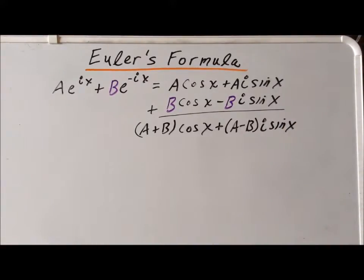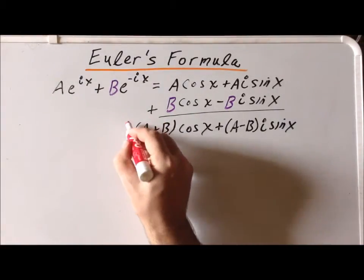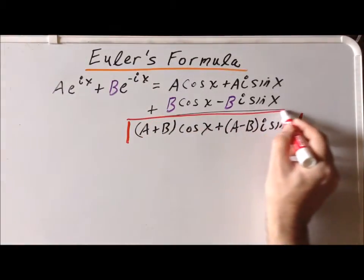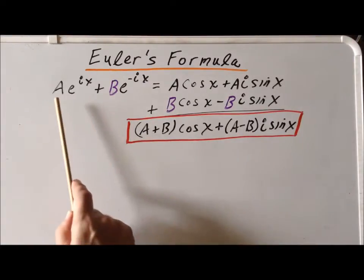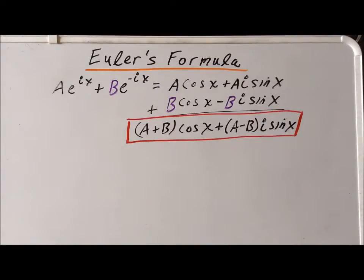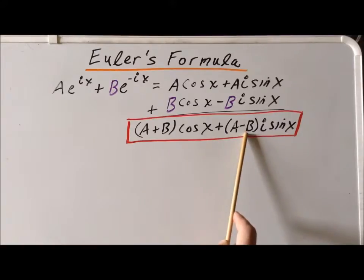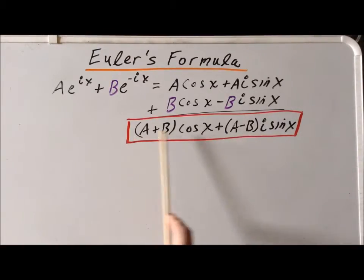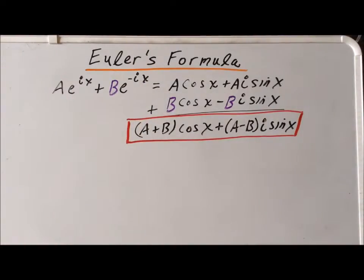Whenever we derive a formula like this, we want to double-check it makes sense. If a and b are both equal to 1, we've already done that example. A plus b would be 2, giving 2 cosine of x, and a minus b would be 1 minus 1 equals zero, so that term drops out. This reduces to 2 cosine of x, exactly what we saw when we had e to the ix plus e to the minus ix with implied coefficients of 1. The formula makes sense.